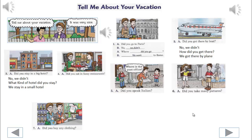4. We'll begin. Did you eat in fancy restaurants? No, we didn't. Where did you eat? We ate in cheap restaurants.